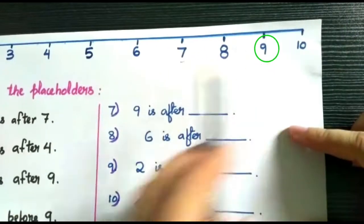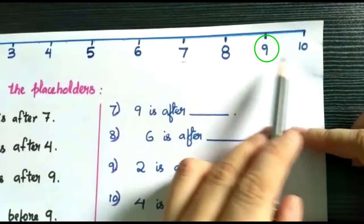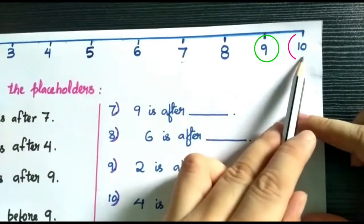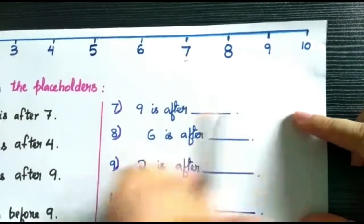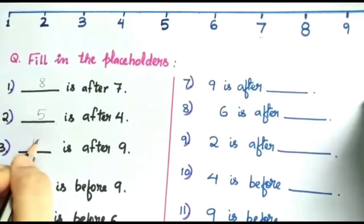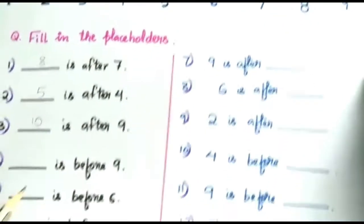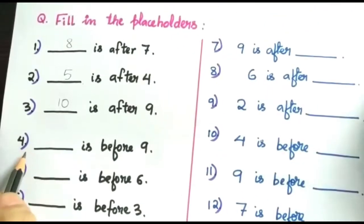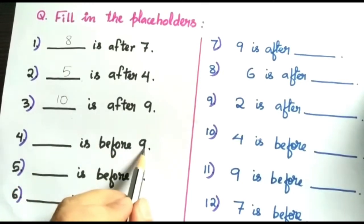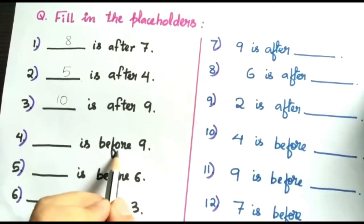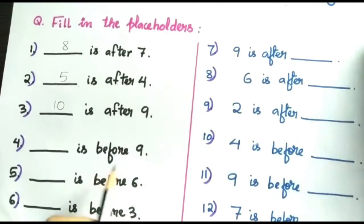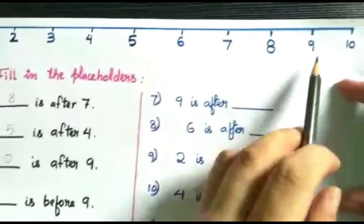Now number three: dash is after nine. Nine — can you see nine? Nine ke aage kya hoga? What comes after nine? After nine is ten, so we'll write here ten. Now next question, number four: dash is before nine. Before matlab backward — pehle wali number. Before nine, nine ki pehle wali number kaun sa hai?